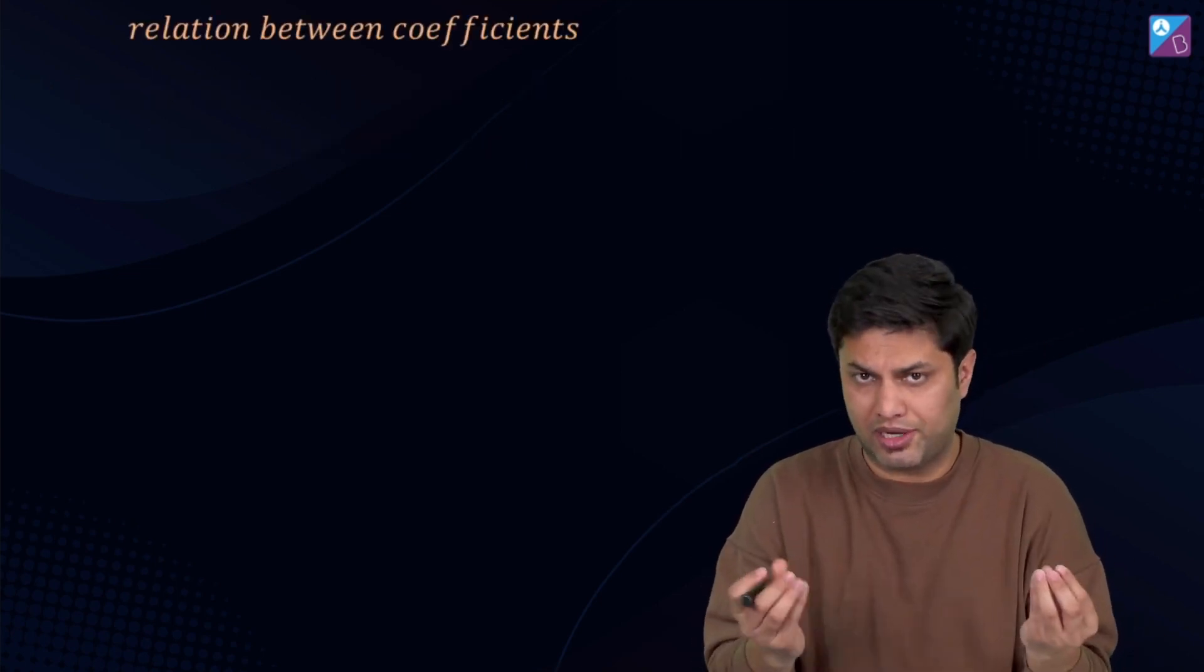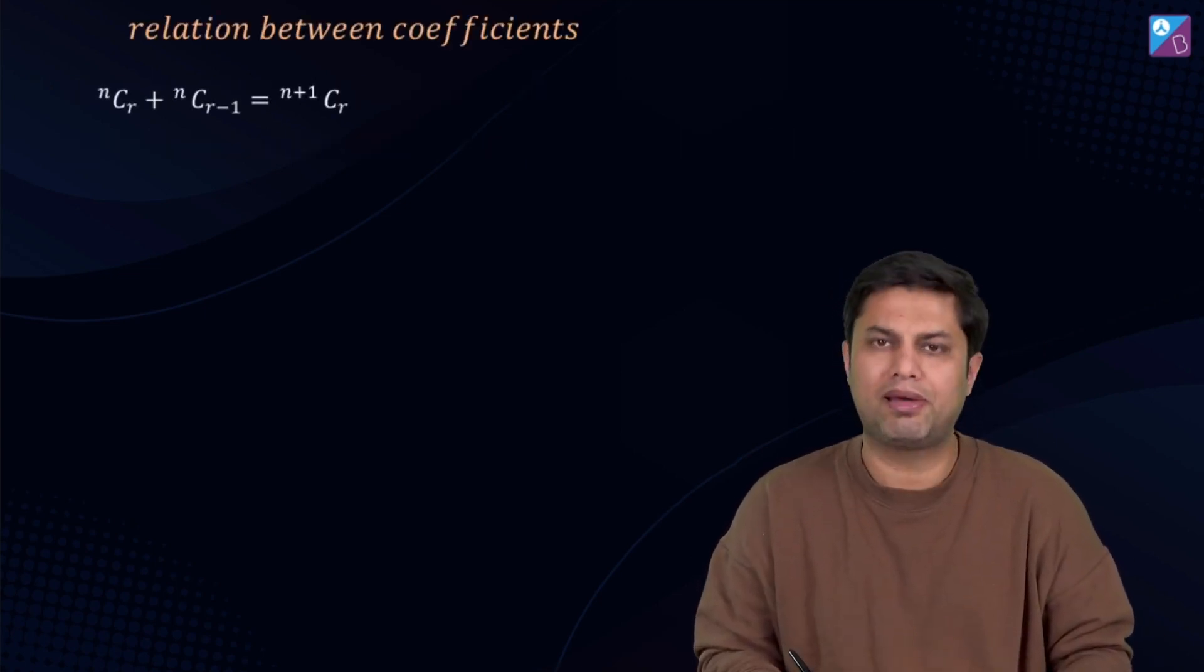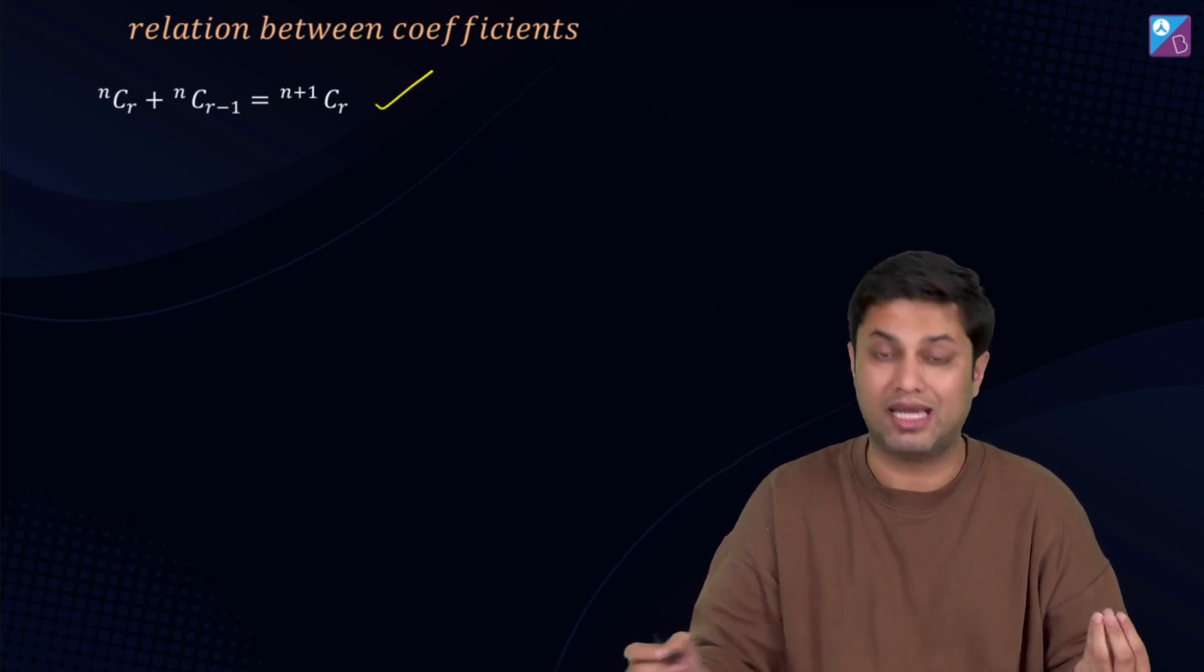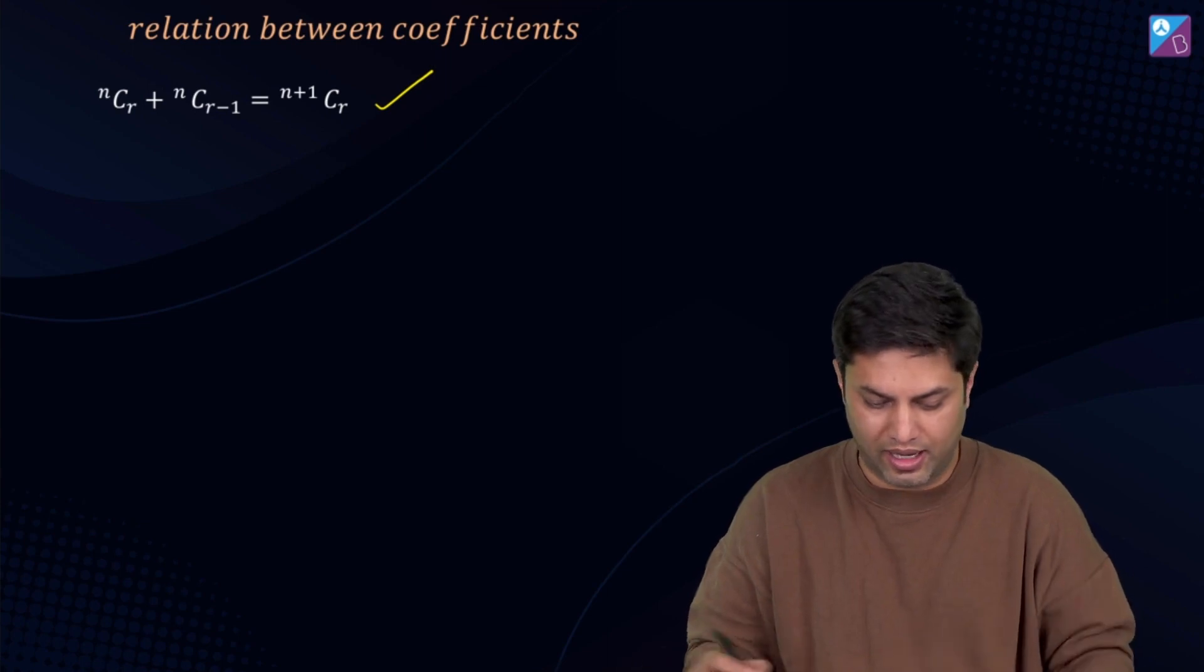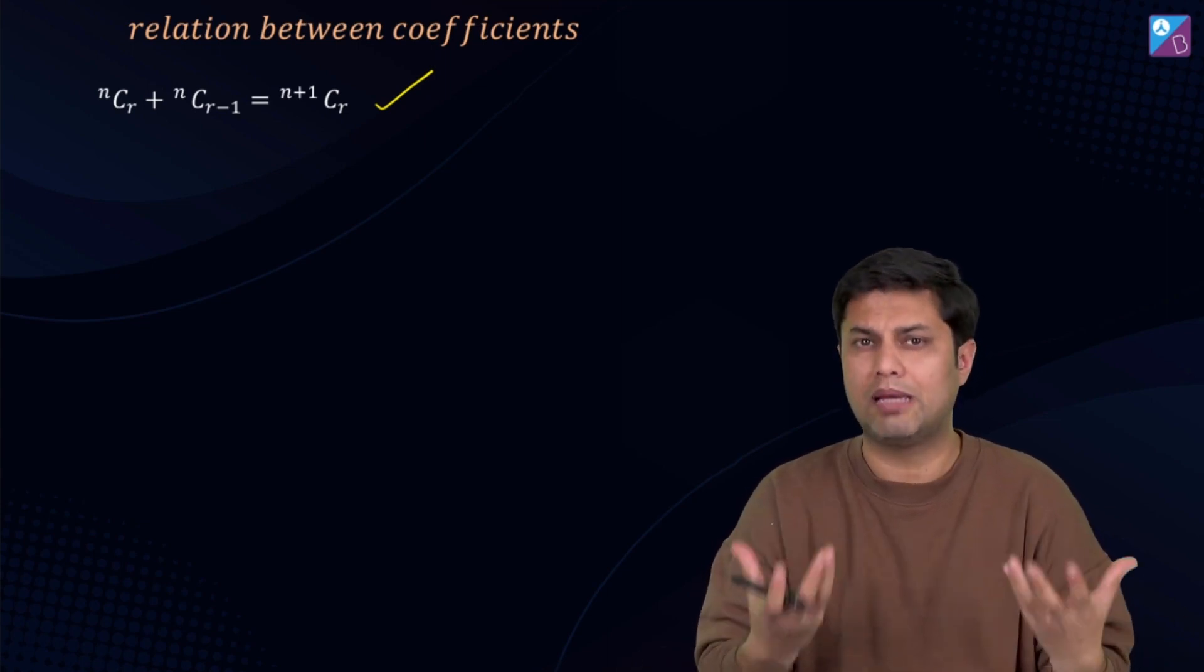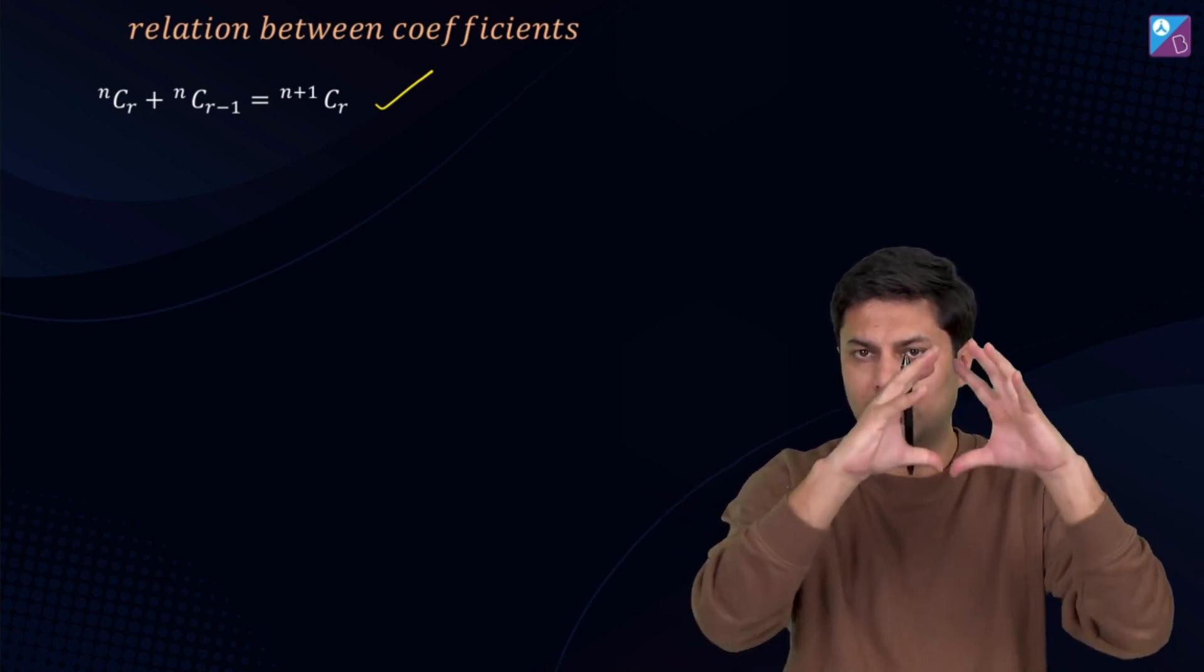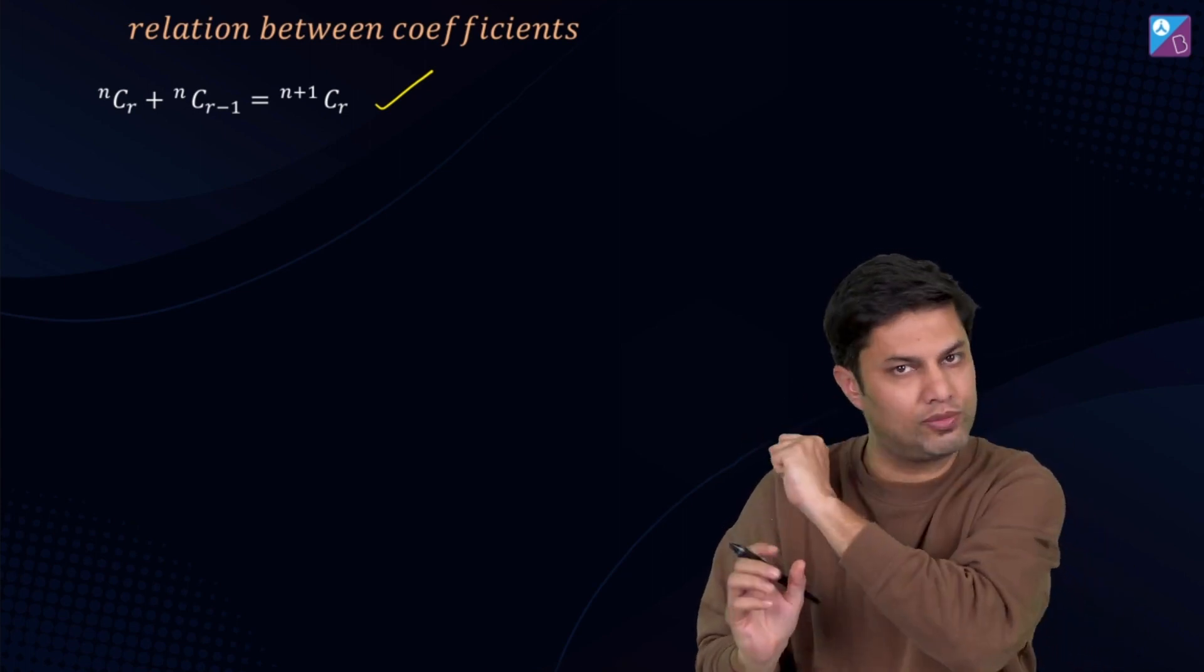Let's go. Coefficients, if we talk about relation between coefficients, the sum of consecutive coefficients: nCr + nCr-1 = n+1Cr. This is a very important formula. This is also a problem in JEE Main which you can solve when adding two consecutive coefficients.